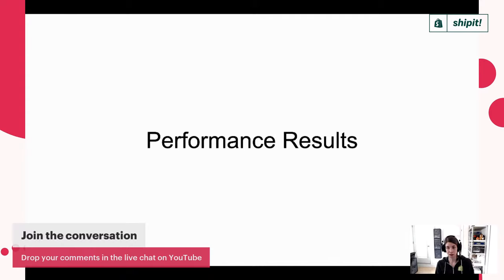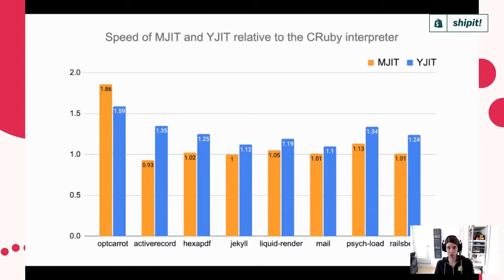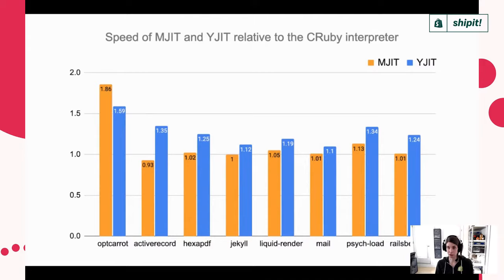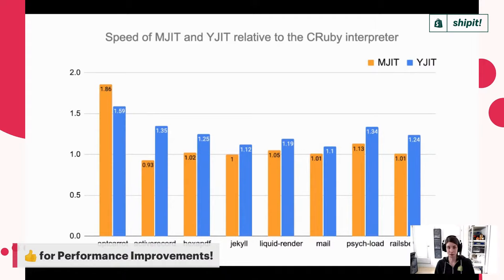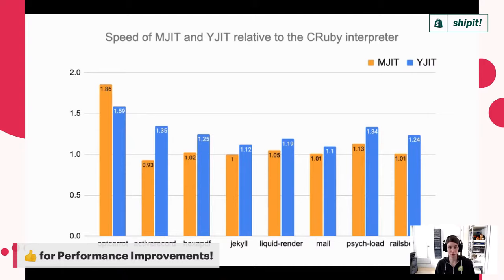This graph shows the performance of MJIT and YJIT compared to the Ruby interpreter — higher is better, with the interpreter at 1.0. On every benchmark, YJIT is able to do better than the interpreter, and we also outperform MJIT on almost all benchmarks. The real-world benchmarks on the right — ActiveRecord, HexaPDF, Jekyll, Liquid, Mail, Cyclode, and RailsBench — are all based on real-world Ruby gems. The benchmark on the left is opt-caret, a classic NES emulator benchmark used in the Ruby community for years. YJIT outperforms MJIT on everything except that synthetic benchmark.